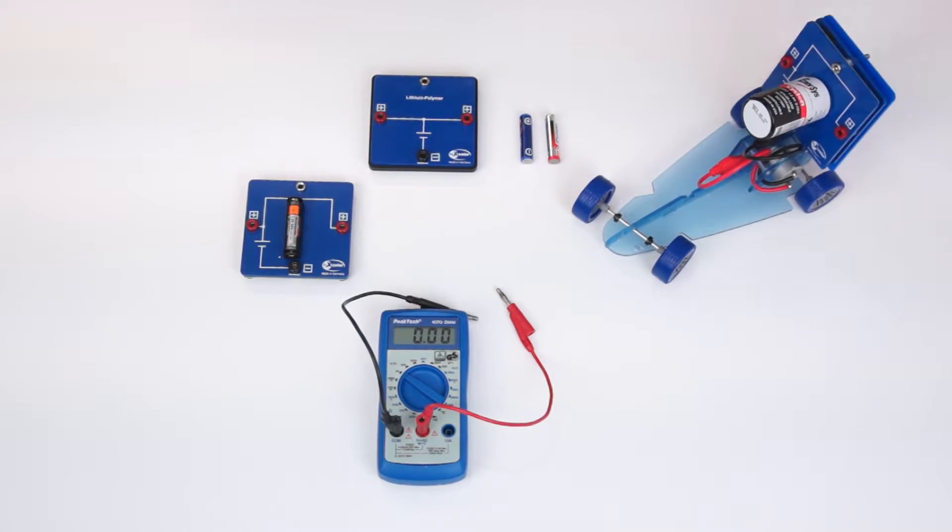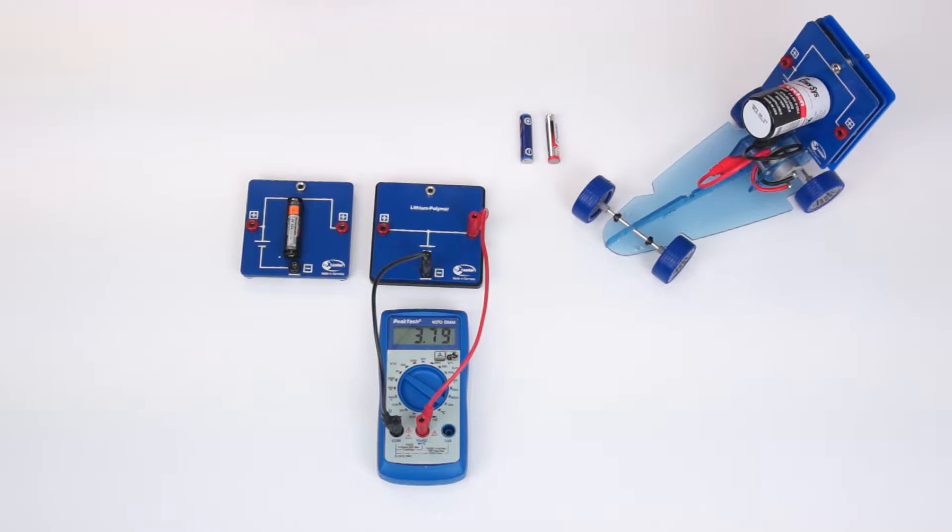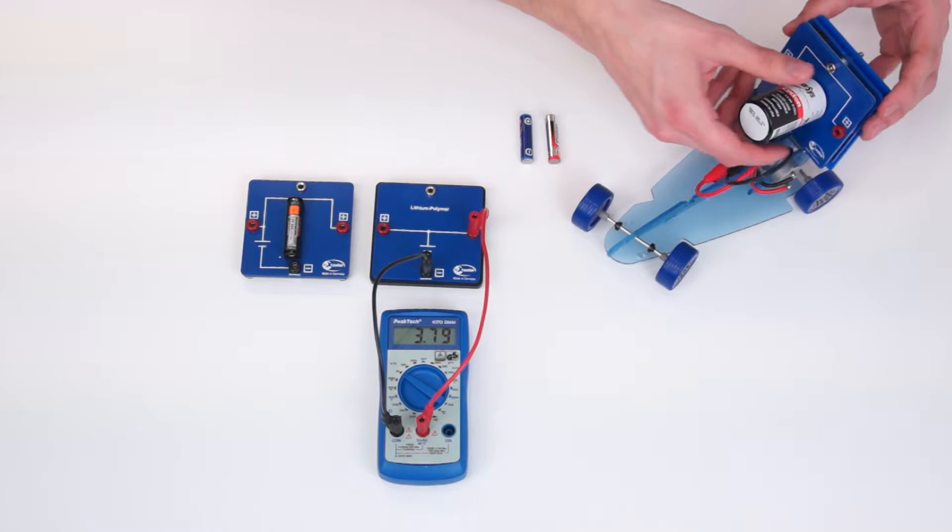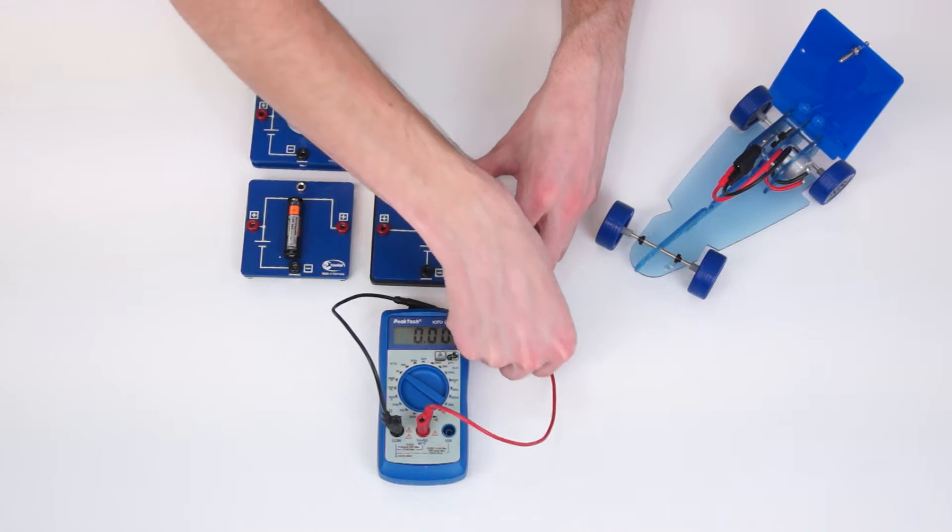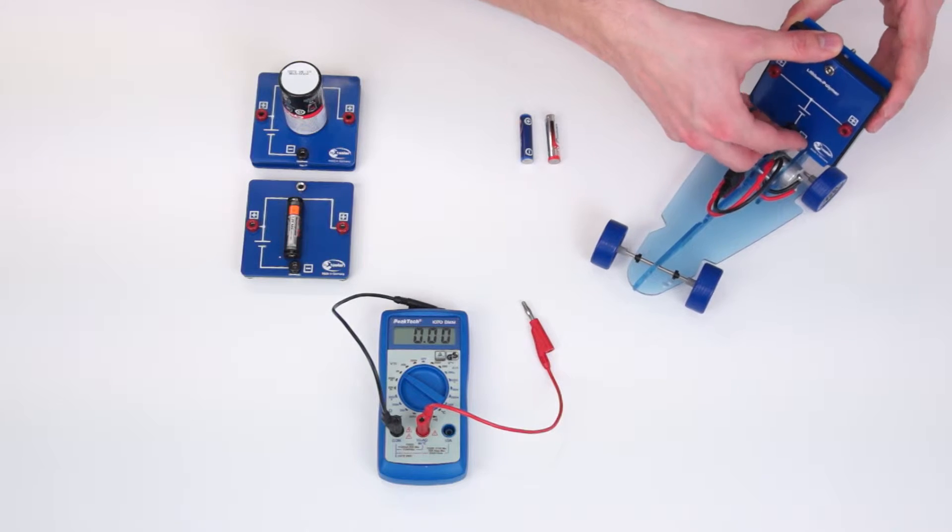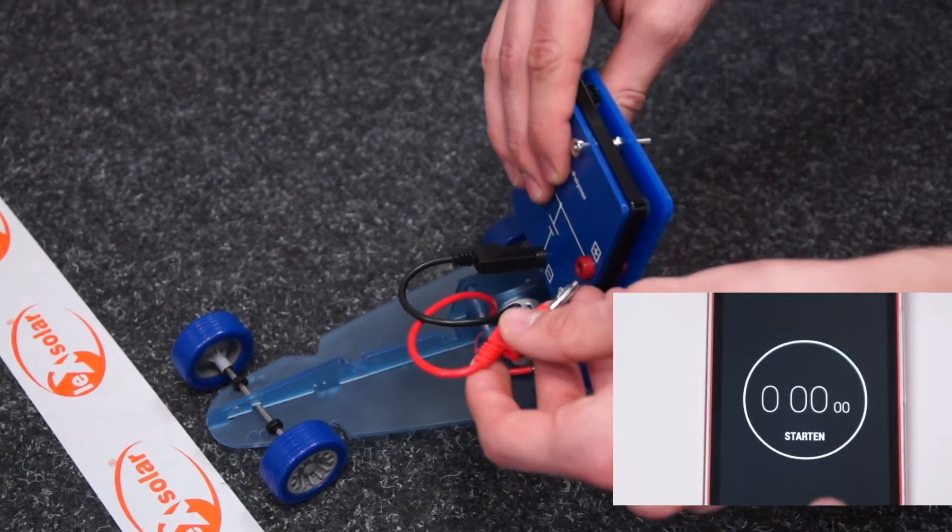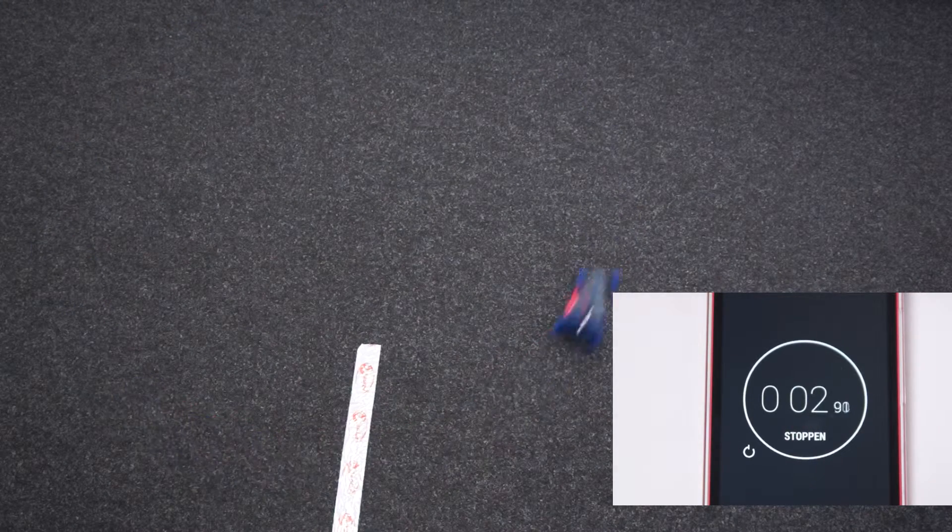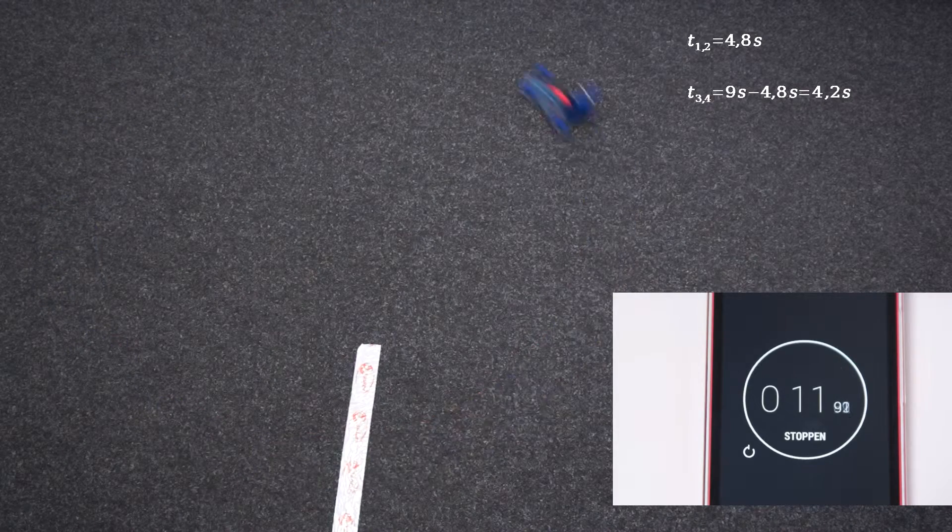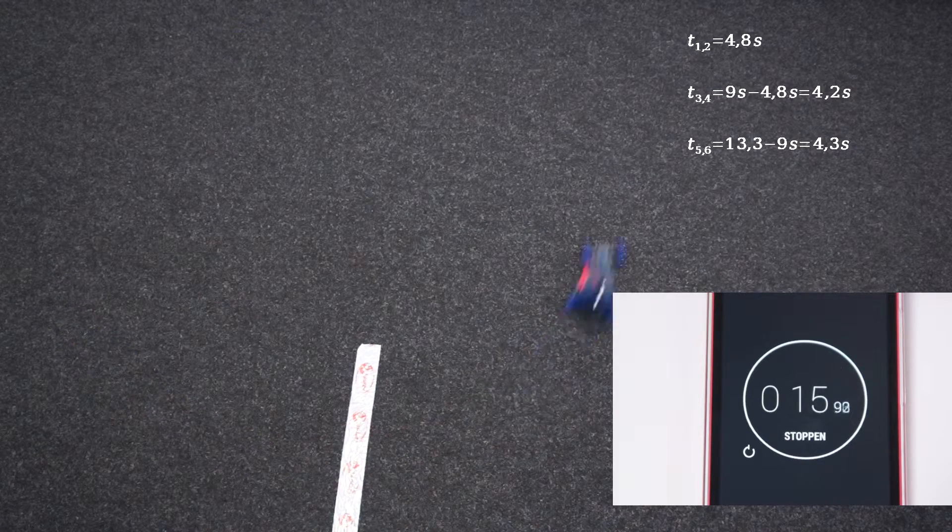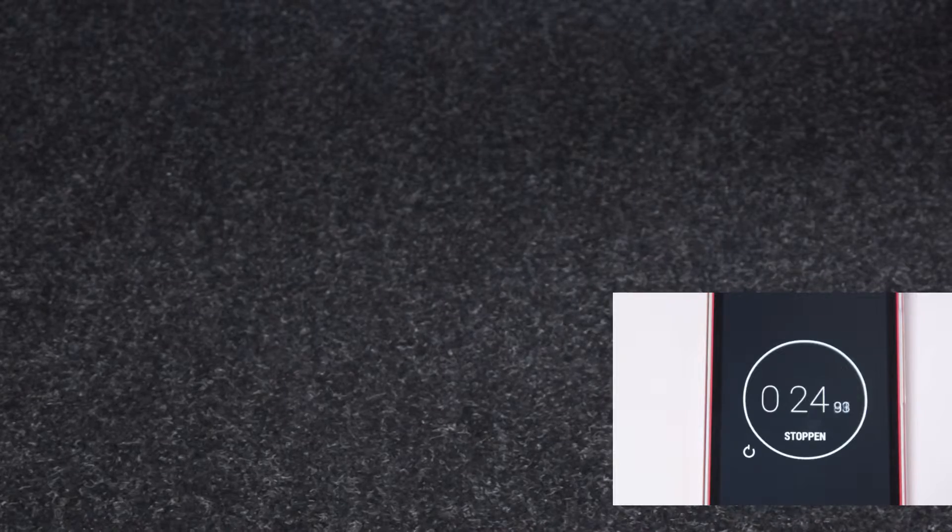After this experiment, we want to use the lithium polymer battery. From this we can also determine the open circuit voltage. It amounts to 3.79 volts. It is fastened to the car in the same way as the lead battery. When it is ready, we start the test again. As you can see, the car moves faster by far. It doesn't slow down either, and we end the test after 10 rounds.